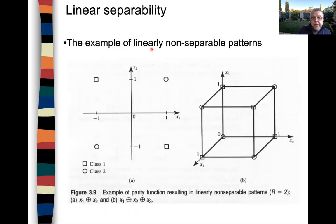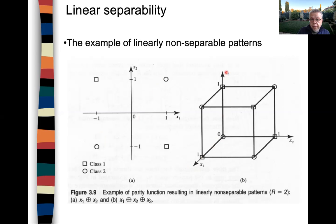An example of linearly non-separable patterns: the XOR problem shows that the square class cannot be separated from the circle class with just one neuron. This is in the case where you have three inputs, X1, X2, X3 — this is the XOR in the three-dimensional case.